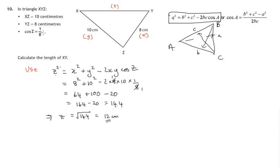So to spell it out: calculate the length of XY. XY is 12 centimetres. So that's Mr. Corsi signing out. Thanks for watching this video.